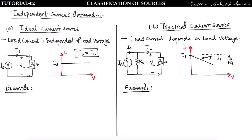Now let us look at the ideal current source. An ideal current source is one in which the load current is independent of load voltage. No matter what the load voltage is, when you increase the load voltage the load current remains constant. Load current does not depend upon load voltage. Let us take one example — a 5-ampere current source that is ideal in nature.